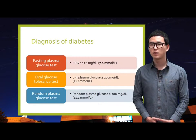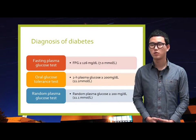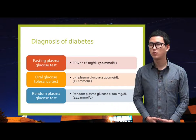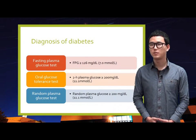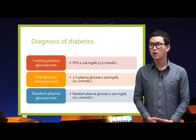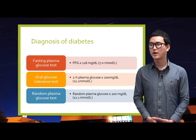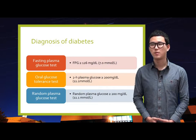A random plasma glucose test, also called a casual plasma glucose test, measures blood glucose without regard to when the person being tested last ate. This test, along with an assessment of symptoms, is used to diagnose diabetes but not prediabetes.